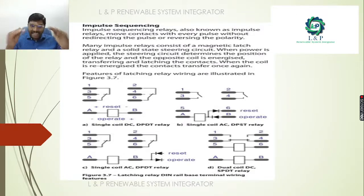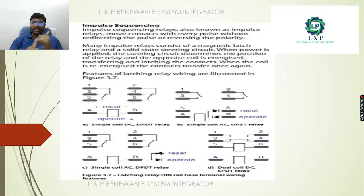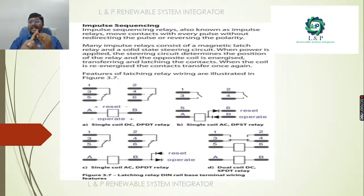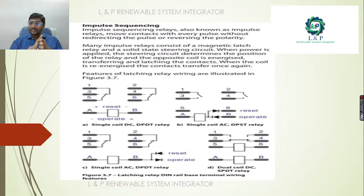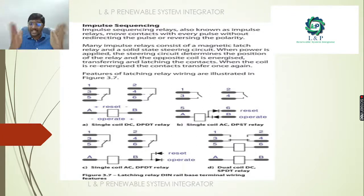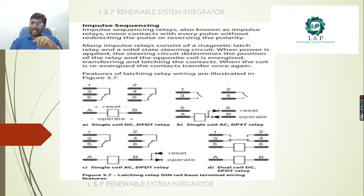The third type is impulse sequencing. In this type, the relay moves the contact with every pulse without redirecting the pulse or reversing polarity. Examples of impulse sequencing relays include: a double pole double throw relay with single coil AC; a single coil AC double pole single throw relay; a single coil AC double pole double throw relay; and a dual coil single pole double throw relay. These latching relays can be mounted on a DIN rail base with terminal wiring features.